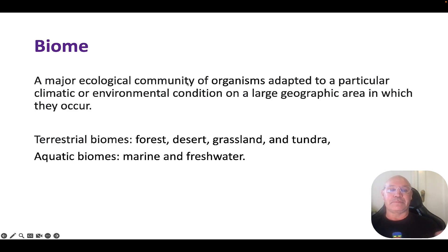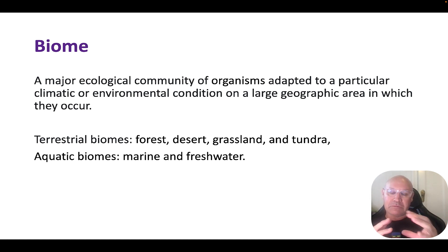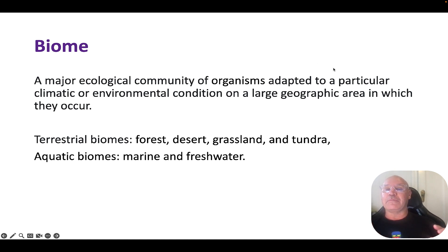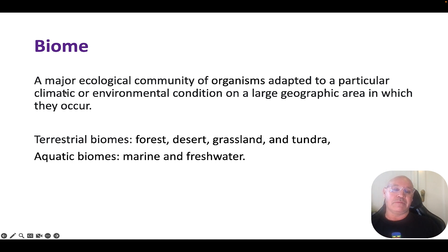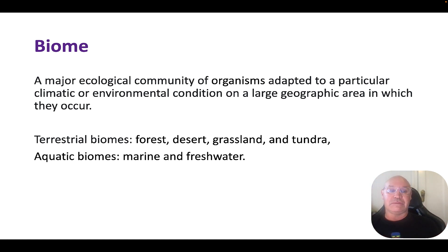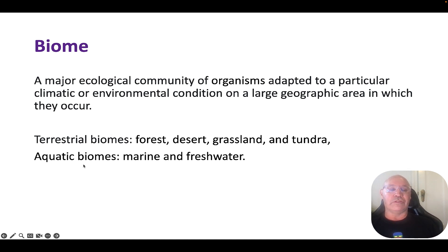So what's a biome? A biome is a major ecological community of organisms. Remember, a community is all of the organisms of different species. So it's a major ecological community of organisms that are adapted to a particular climatic and environmental condition on a large geographical area. It's determined by the climate and the environmental conditions, and the organisms that live there are adapted to those conditions. We can basically divide biomes into land and water — terrestrial and aquatic.